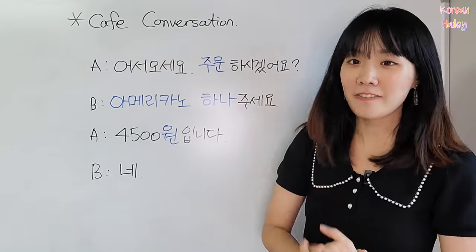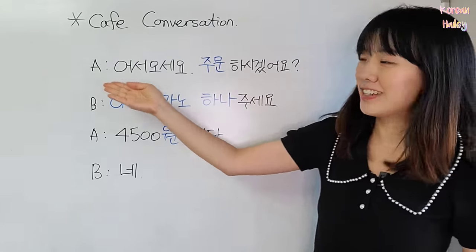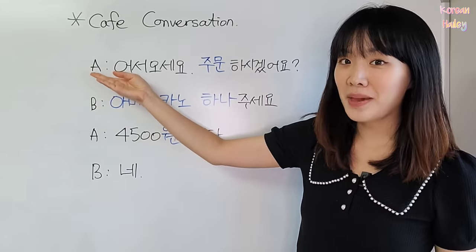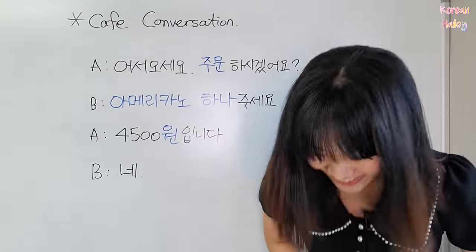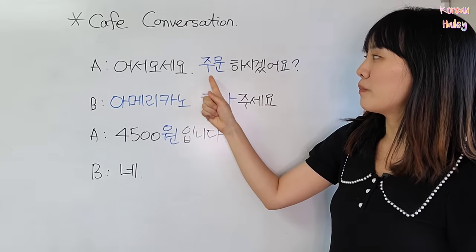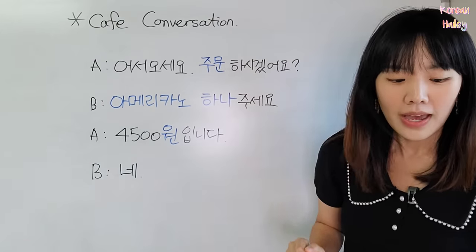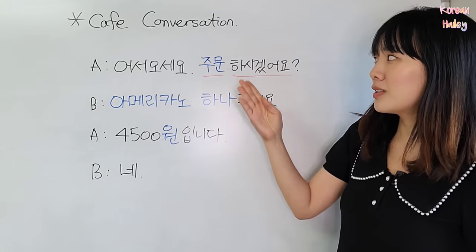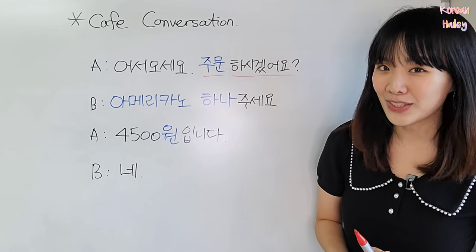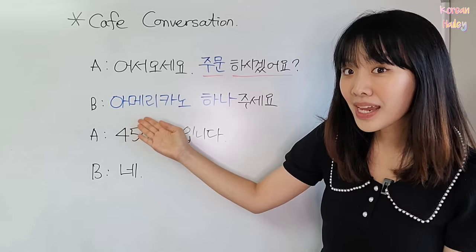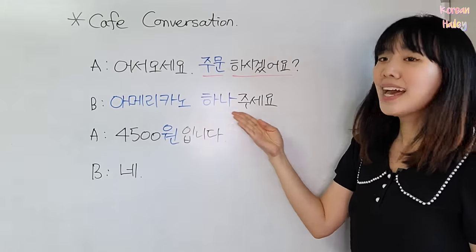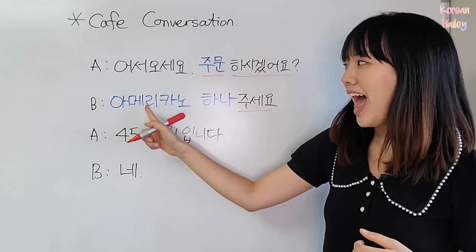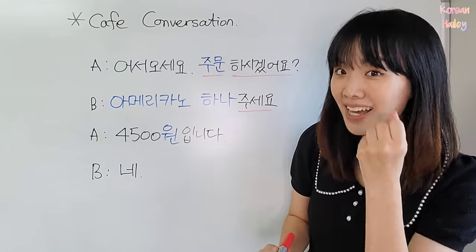Okay, 친구들. So we came back with a cafe conversation. A is the staff and B is you — you want to order something. The staff says 어서 오세요, welcome, and then 주문 하시겠어요? — 주문 was order, and 하시겠어요 was 'would you like to?' So: 'Would you like to order?' And then you can say 아메리카노 하나 주세요. 하나 was one, and 주세요 was 'please give me.' 아메리카노 하나 주세요.